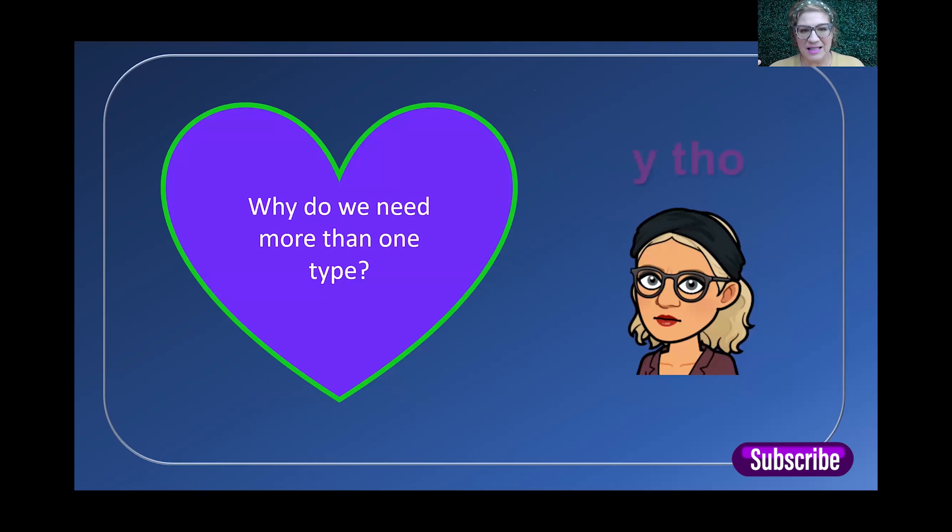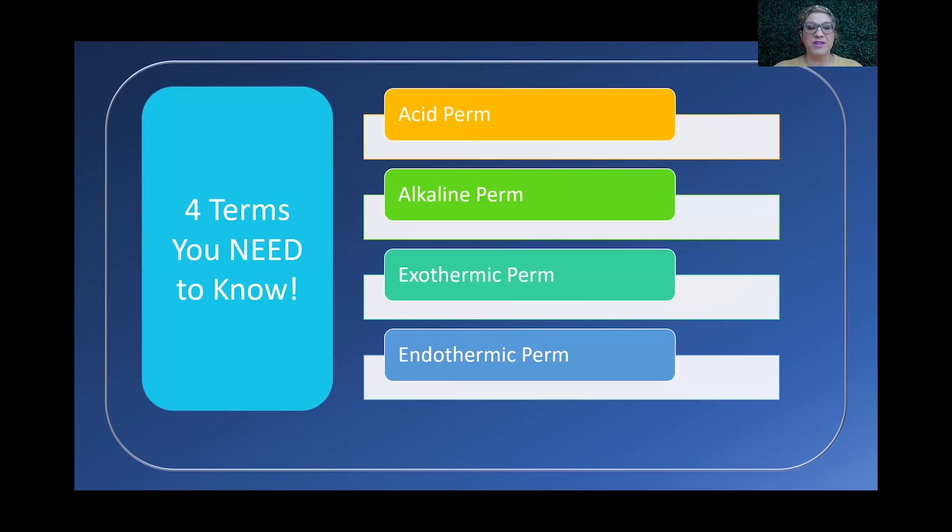So why do we need more than one type of perm? Perms kind of suck as it is. Nobody really loves doing them. I hate to say that they're outdated because they are back, my friends, if you like it or not. Perms are a thing. It's not just the old lady perm that we did when we were in hair school. So why do we need to know about it? Well, it's relevant. It's money in your pocket by being able to do them. Understanding the difference between the two could make or break literally someone's hair. This is why we need multiple types. There's lots of different types of hair out there.